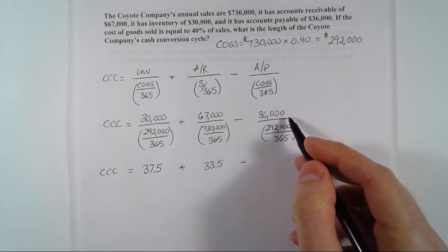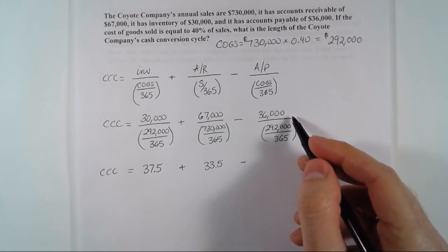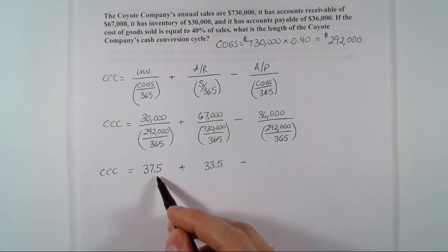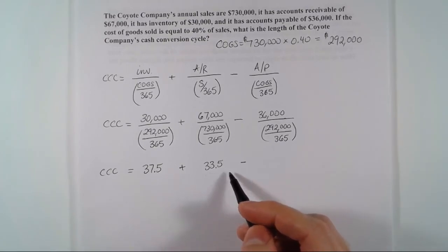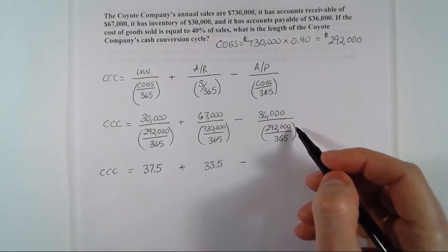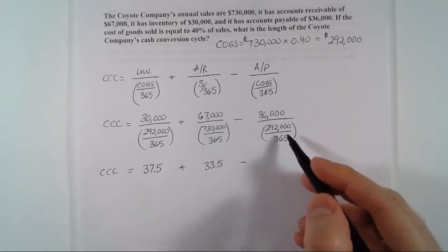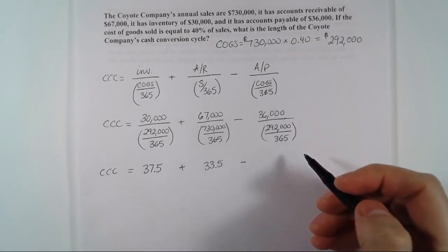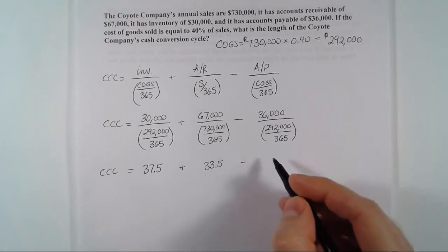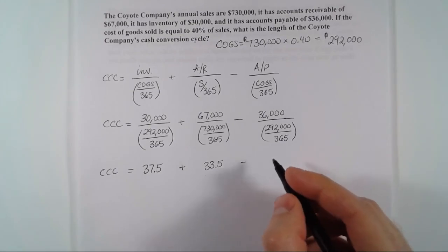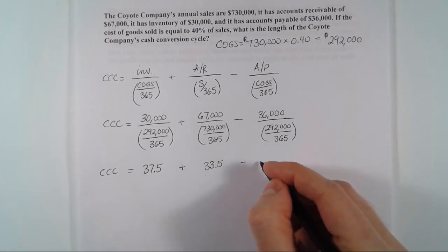The third component represents the delay between when goods are purchased from suppliers and when they are paid for — the payables deferral period. When those goods came in the back of the business, the supplier hadn't been paid yet. Working this out, the Coyote Company's payables deferral period is 45 days.